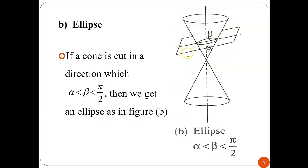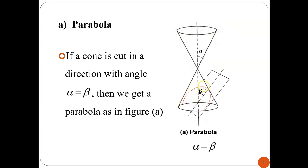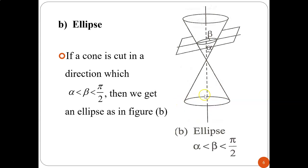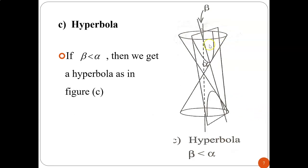For a parabola, you only cut one side and get a U-shape. But for an ellipse, you get an oval shape (bujur) — it is tilted slightly (condong sedikit). For a hyperbola, it is actually a pair of parabolas (sepasang). Previously with a parabola, you only cut the bottom or top half. With a hyperbola, you cut both upper and lower cones, giving you a U-shape at the top and a U-shape at the bottom. That is hyperbola.